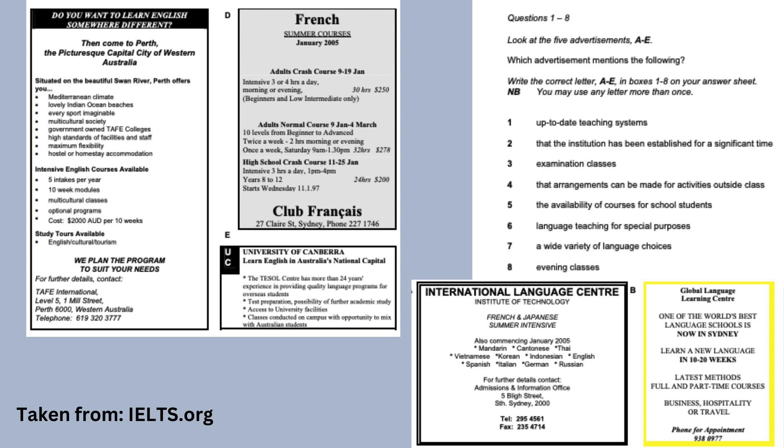The ninth question type is the match information question. It is similar to match headings, but while match headings asks you to find the best heading to summarize an entire paragraph, match information asks you to identify a specific piece of information within a paragraph — essentially, which paragraph contains the information you are looking for. For this question type, I recommend first reading the passage paragraph by paragraph to understand what each one is generally about, and then looking at the questions so it becomes easier to find the answers.